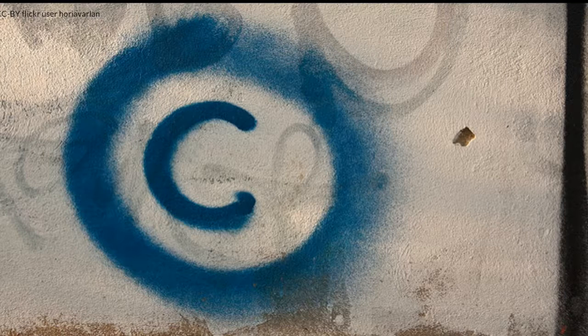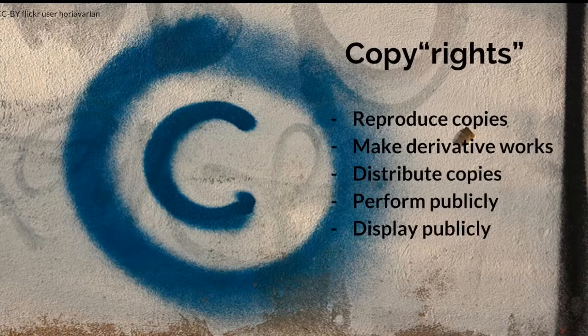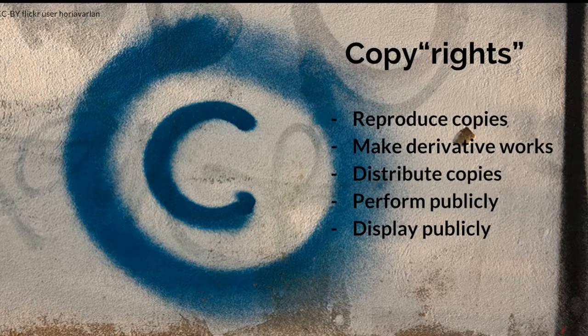What is copyright? Copyright is a form of legal protection that provides authors with limited control over the production and distribution of their work. The types of works protected by copyright include literary, musical, dramatic, graphic, sculptural, and choreographic works. Within your copyright, there are five standard rights: the right to reproduce copies, make derivative works, distribute copies, and perform or display the work publicly.